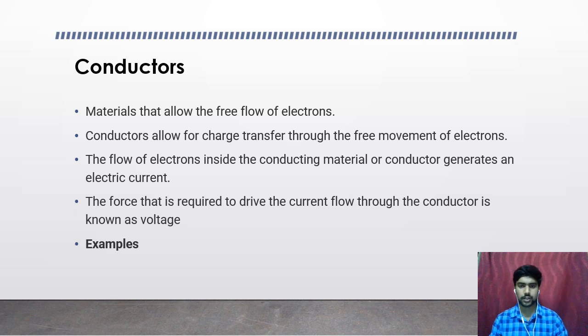These electrons will be moving randomly before they are connected to an external battery or a cell. When we connect a conductor across an external battery, this random movement of electrons will be unidirectional, that is they will be regulated to be moving in a single direction, and this regulated movement of the electrons will generate an electric current.